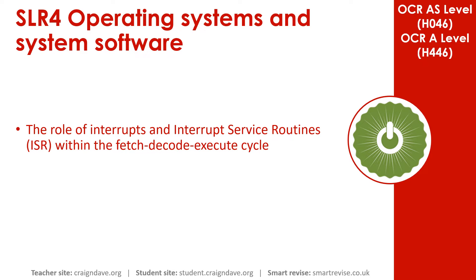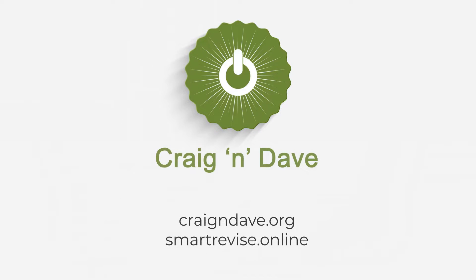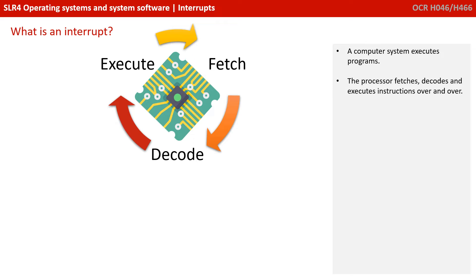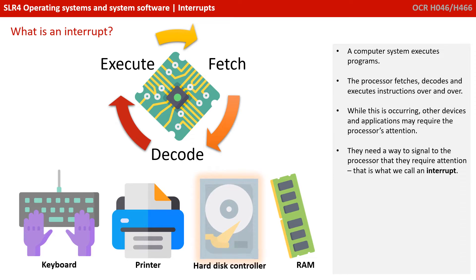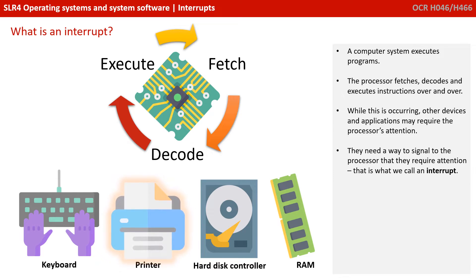In this video we're going to discuss the role of interrupts and the interrupt service routine within the process of the fetch, decode and execute cycle. A computer system executes programs, and it does this by the processor fetching, decoding and executing instructions over and over again. While this is occurring, other devices and applications may require the processor's attention. They need a way to signal to the processor that they require attention, and this is what we call an interrupt.